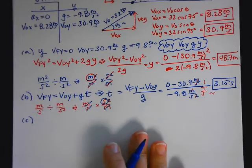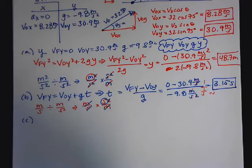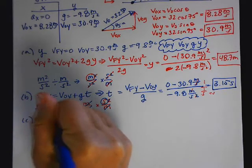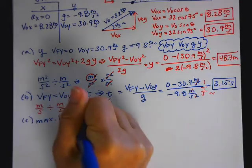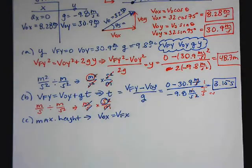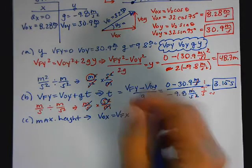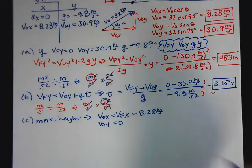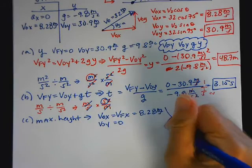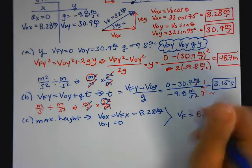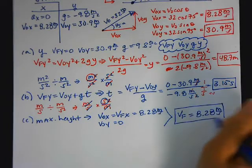Part C says determine the projectile speed at the maximum height. At the maximum height, V-naught X equals V-F-X because the horizontal component of velocity is constant — that's 8.28 meters per second. And V-F-Y is equal to zero. So when they ask for speed at the maximum height, the answer is just 8.28 meters per second. They only ask for speed, so direction doesn't matter.